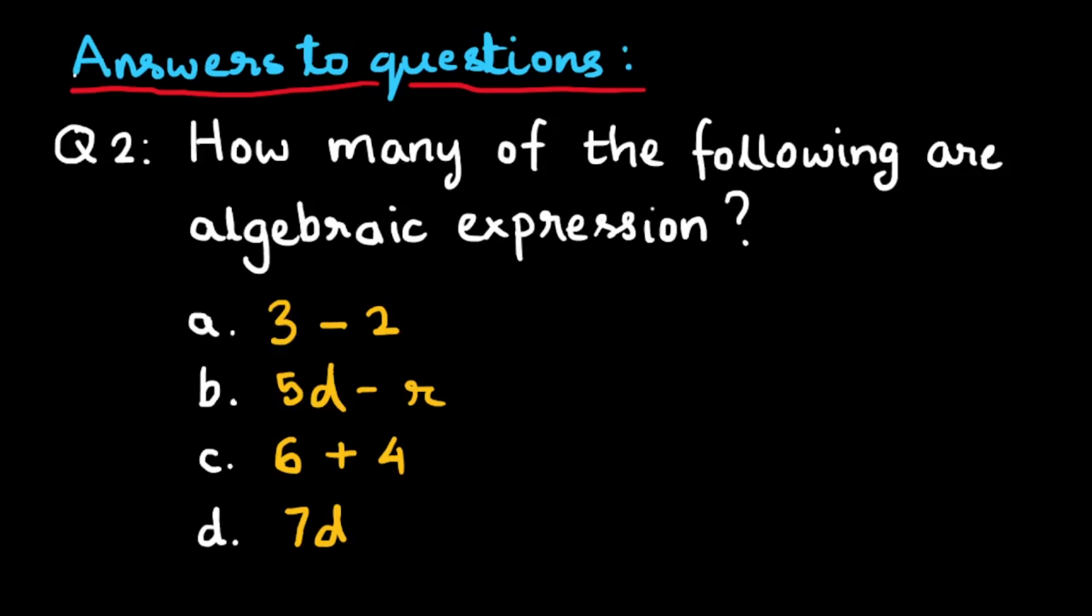Question 2 is how many of the following is an algebraic expression? So our choice is 3 minus 2, 5d minus r, 6 plus 4, and 7d. There are two algebraic expressions in this given choice. An algebraic expression has variables represented by some English letters. So 5d minus r and 7d are algebraic expressions.